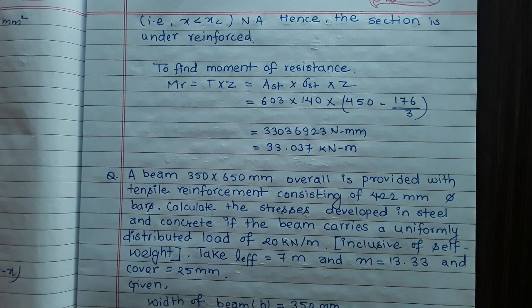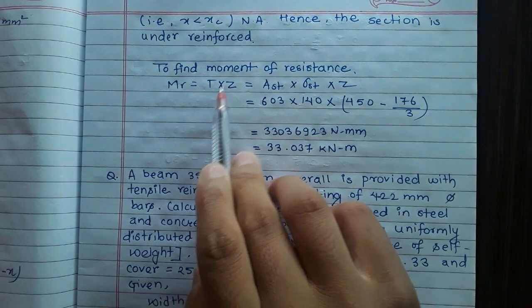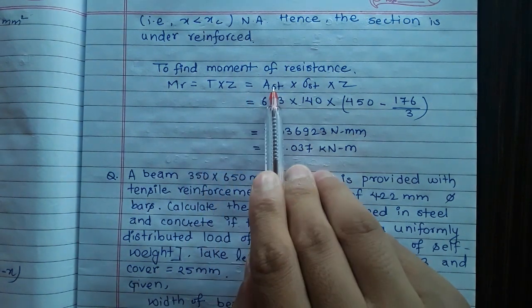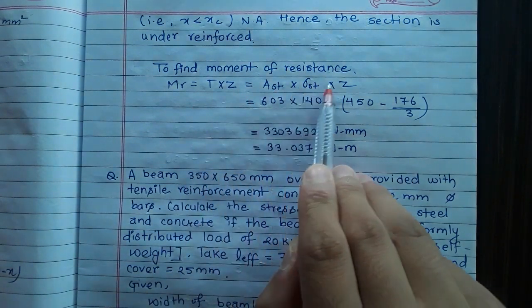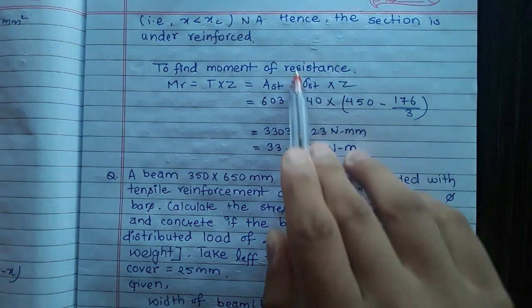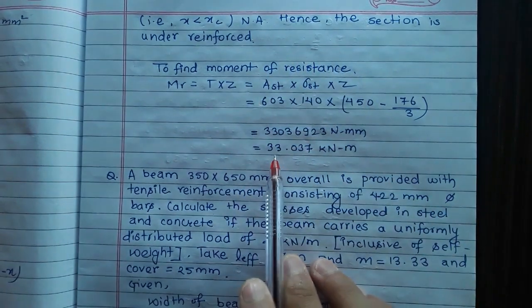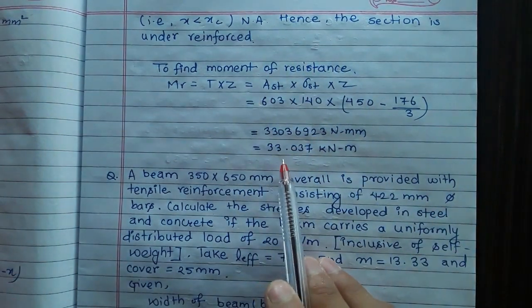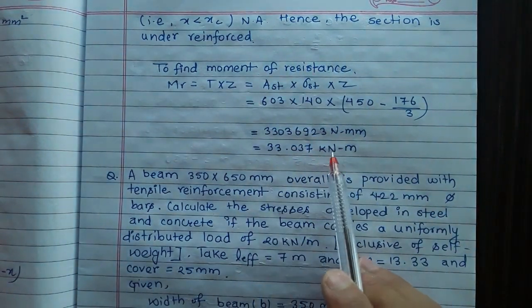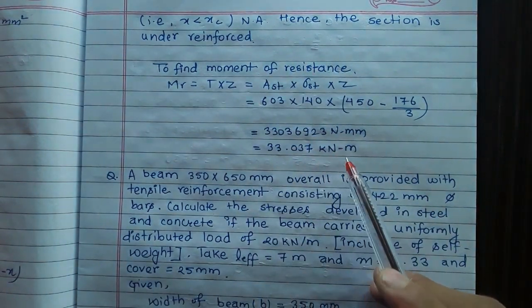To find moment of resistance: MR = T × Z = AST × σST × Z. Substituting the values, MR = 33.037 kN·m.